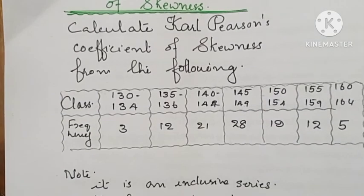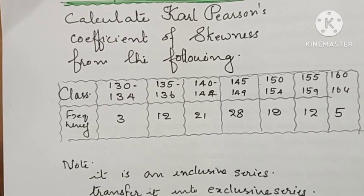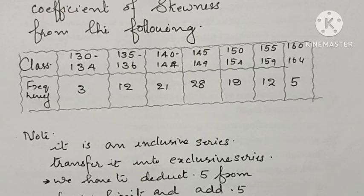Class is given and the frequencies are given. In this class we can see that there is a difference between the upper limit and the lower limit. That means it is an inclusive series.